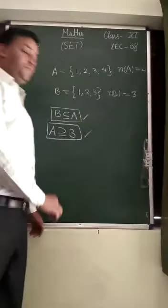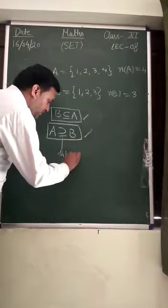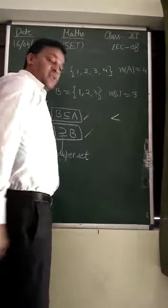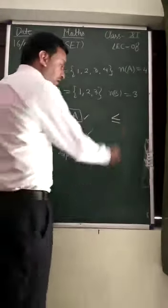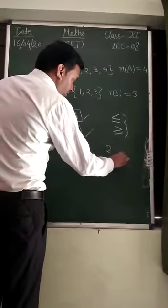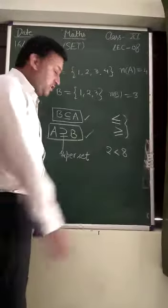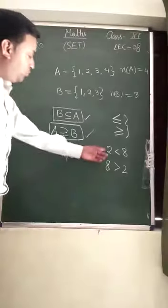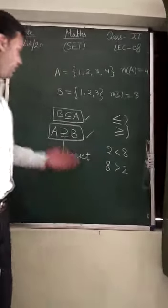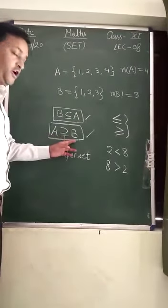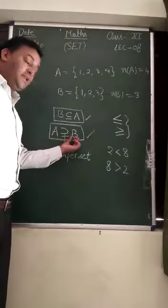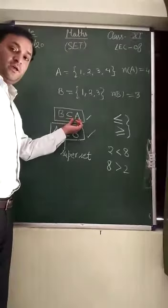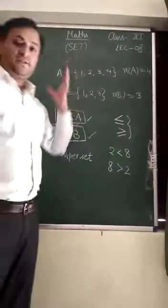This is another important topic. The symbol of superset has the same meaning as less than or equals to, or greater than or equals to in arithmetic. If we say 2 is less than 8, which is correct, we can also say 8 is greater than 2 — both statements are true. Similarly, B is the subset of A, or equivalently, A is the superset of B, because A contains more elements than B. Yesterday I discussed that B is a subset of A because all the elements in set B are also present in set A.